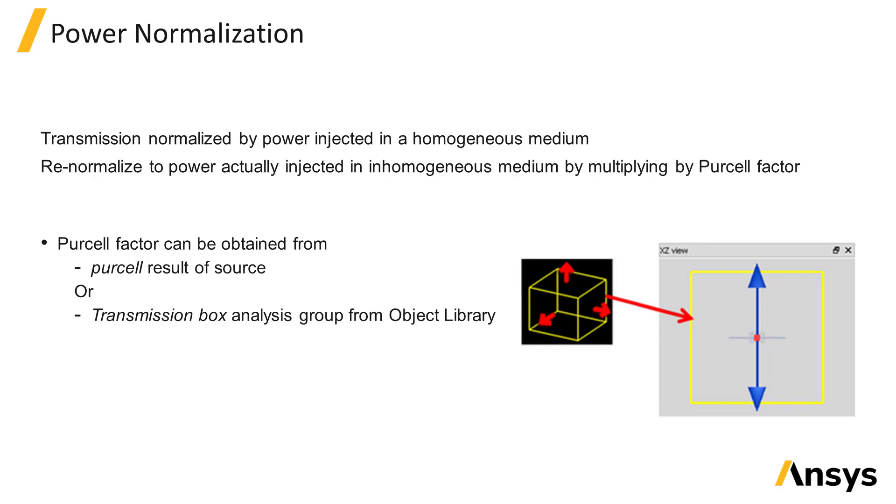The Purcell factor can be obtained from the Purcell result from the source or by placing a box of monitors around the dipole injection region to measure the net power flowing through the box of monitors.